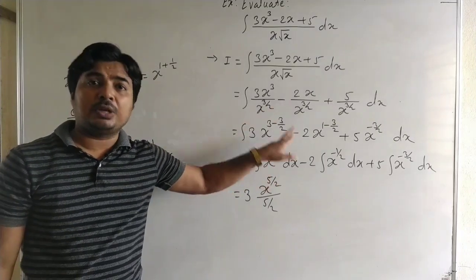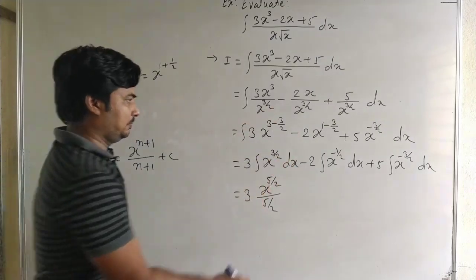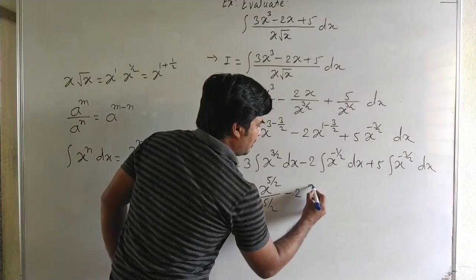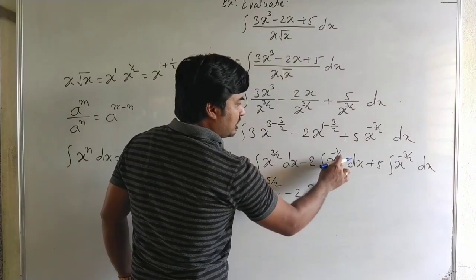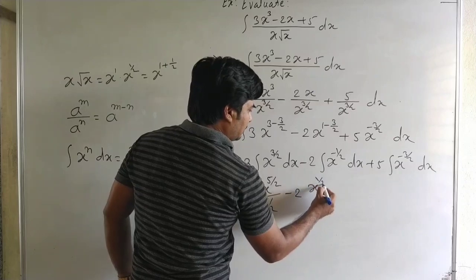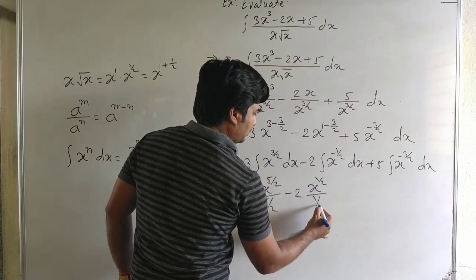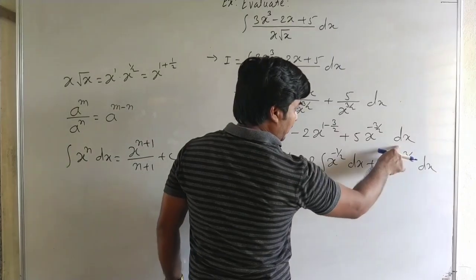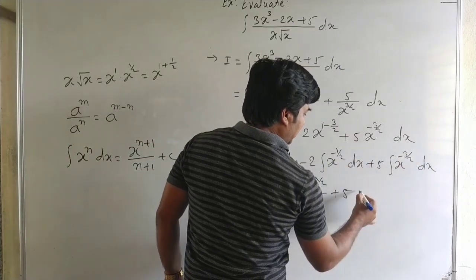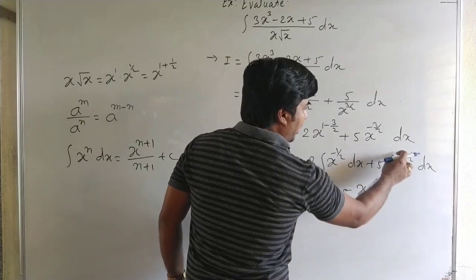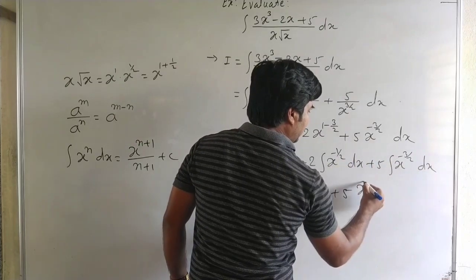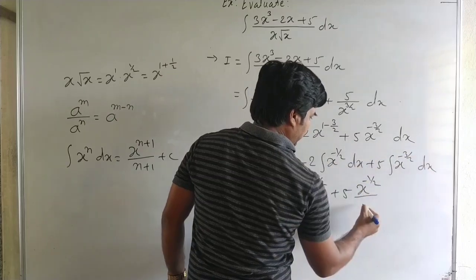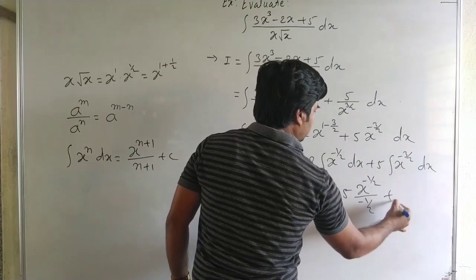Here n is 3 by 2, so n plus 1 is 5 by 2. Then minus 2 into x to the power minus 1 by 2 plus 1 — that is 1 by 2 — upon 1 by 2. Plus 5 into x to the power minus 3 by 2 plus 1 — that is minus 1 by 2 — upon minus 1 by 2, plus c.